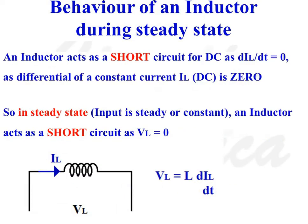Now let us discuss the behavior of an inductor during steady state. For an inductor, voltage drop VL is given as VL = L · dIL/dt. When current flow through the inductor is constant, dIL/dt is equal to zero, so voltage drop across the inductor is equal to zero. In other words, in steady state, an inductor behaves as a short circuit.